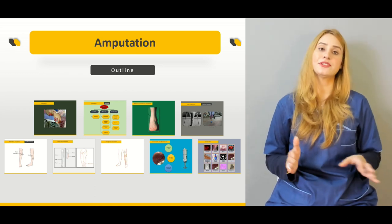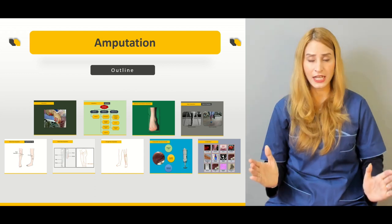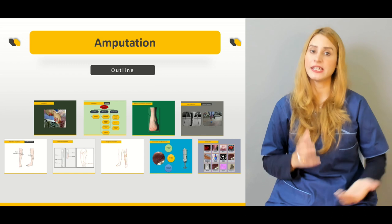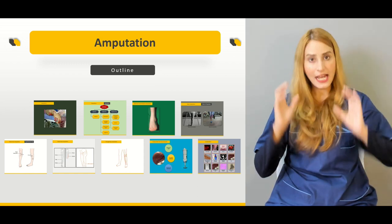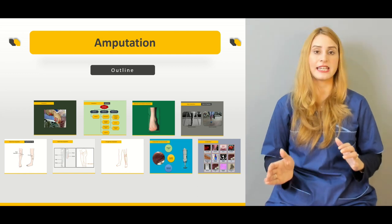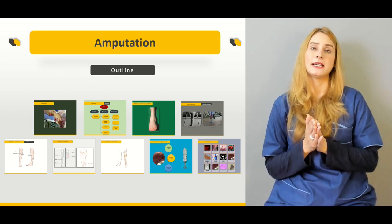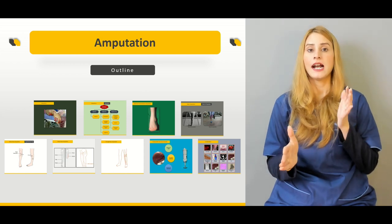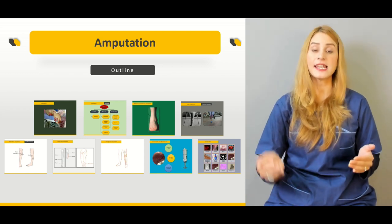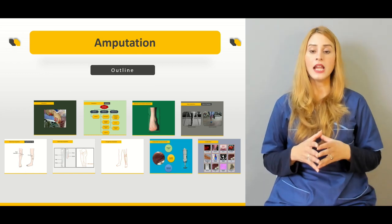We'll be talking about the general principles of amputation — how to make a skin flap, how to make a muscle flap, what principles to keep in mind when ligating vessels, what principles to keep in mind when dealing with nerves, how sharply the nerve should be cut, when the nerve should be ligated, and how the stump is created. We'll also discuss the balance between increased function in distal amputations and lower risk of complications in proximal amputations.